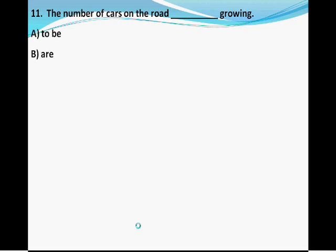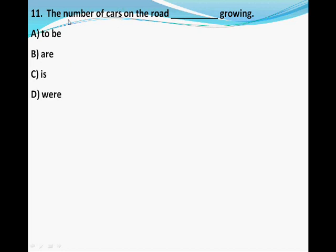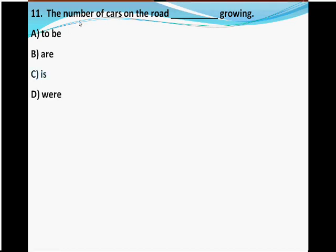Question eleven — 'The number of cars on the road ___ growing.' Options: A) to be, B) are, C) is, D) were. Be careful — the subject here is 'number,' not 'cars.' Some students say 'are growing,' which is wrong. Number is singular, so the correct answer is C, is — 'the number of cars on the road is growing.'